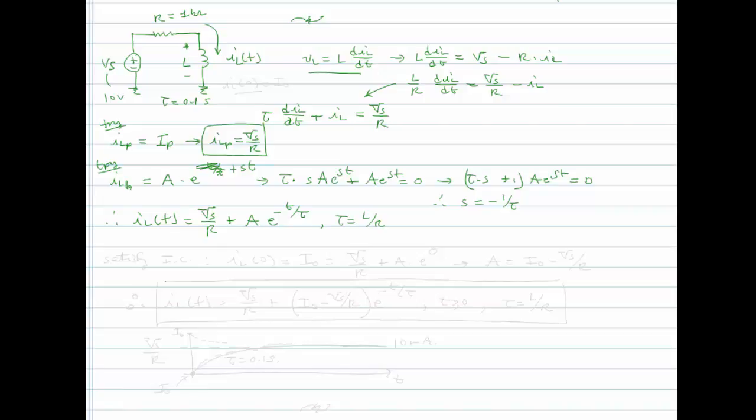Now, if we have an initial current, let's assume that IL at time zero is equal to IO. That's the initial condition. So, satisfy initial condition. IL at time zero is equal to IO and that is equal to VS over R plus A times E to the zero. So, this leads to A being equal to IO minus VS over R.